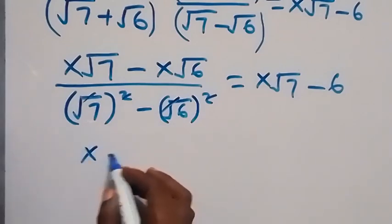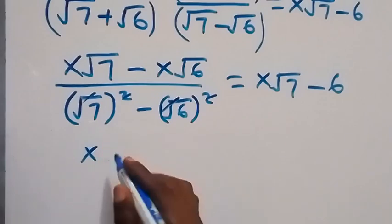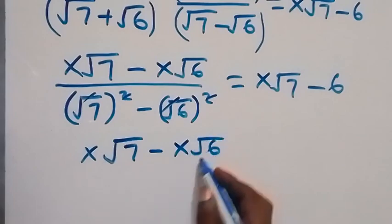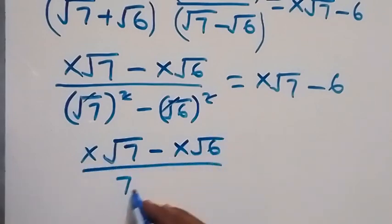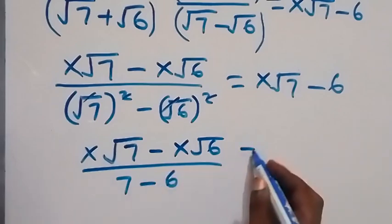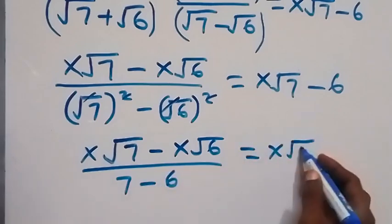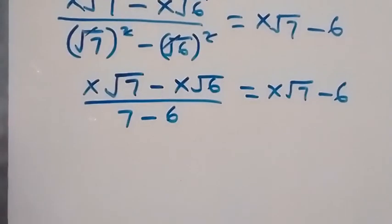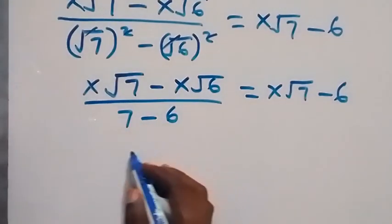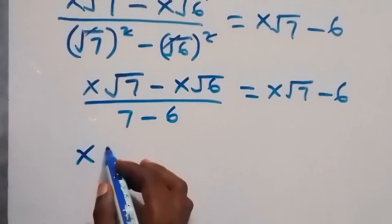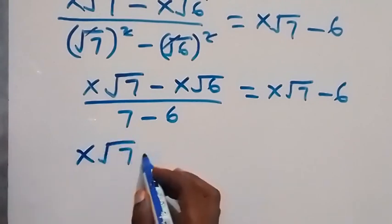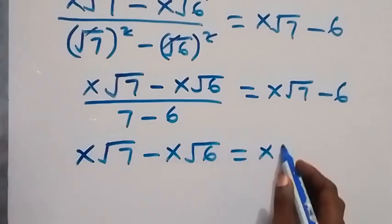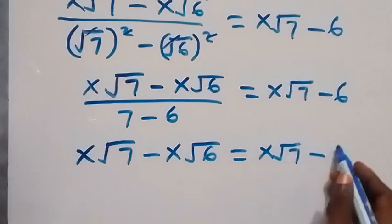And we have x root 7 minus x root 6 divided by 7 minus 6 equals to x root 7 minus 6. And in the next step, 7 minus 6 is 1, so we have x root 7 minus x root 6 equals to x root 7 minus 6.